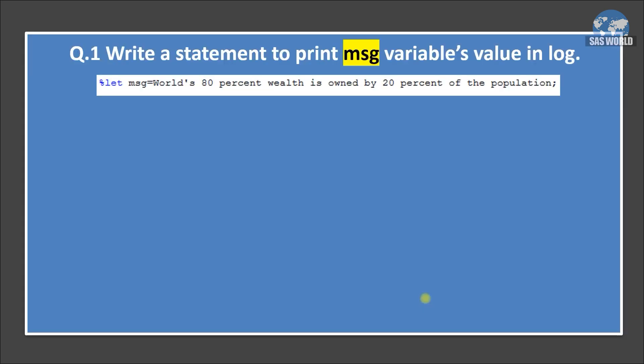Write a statement to print MSG variable's value in log. So in this statement, we are creating a macro variable message MSG. And in that macro variable, we are assigning text that is world's 80% wealth is owned by 20% of the population. Is it true? Yes, it is true. But we are not going to discuss this message. Let's stick to our topic only.